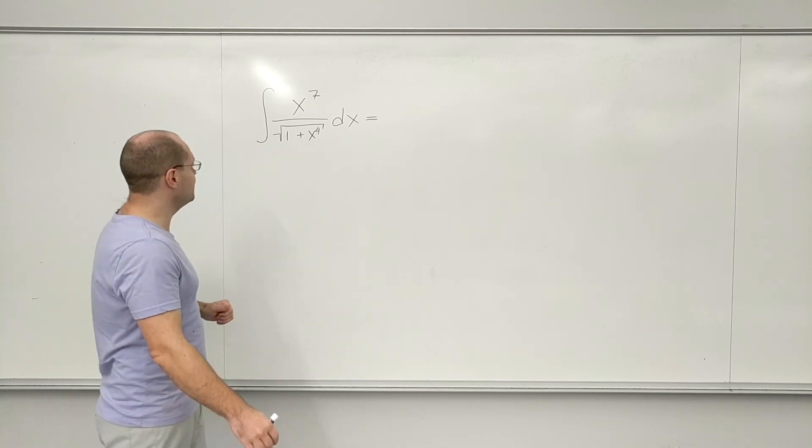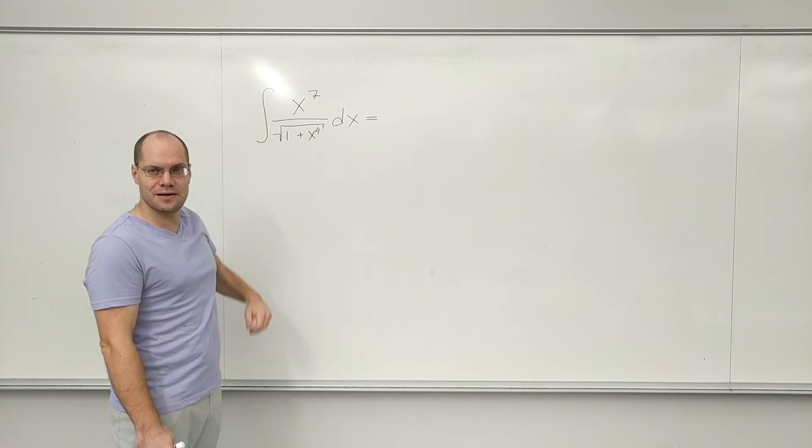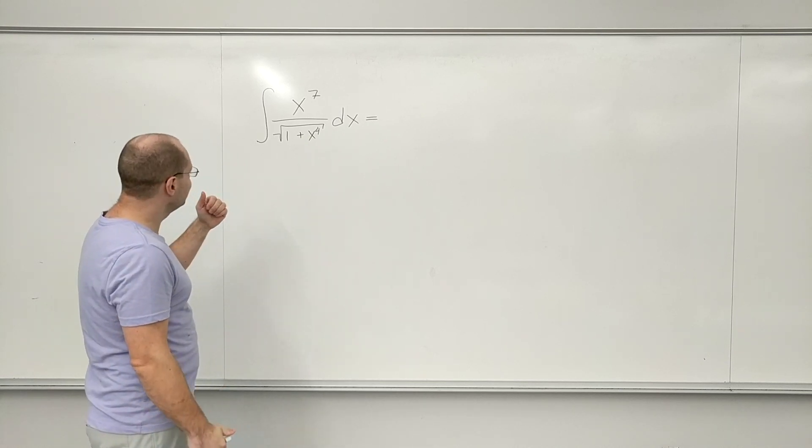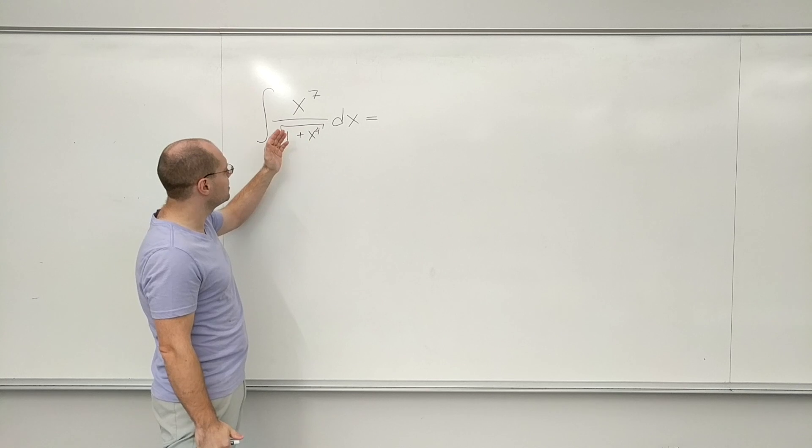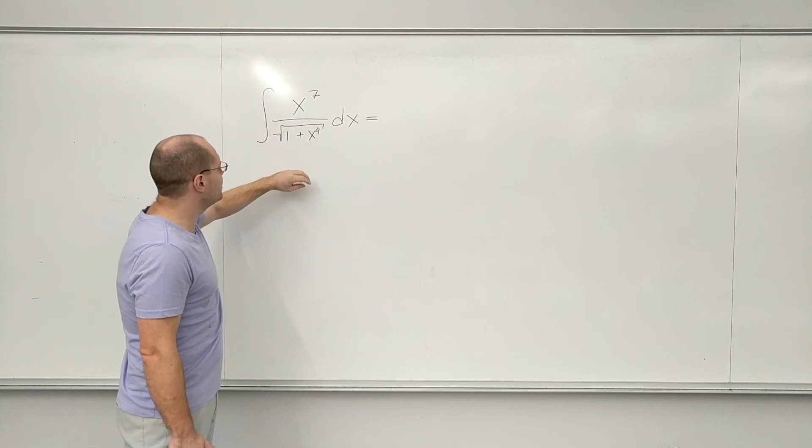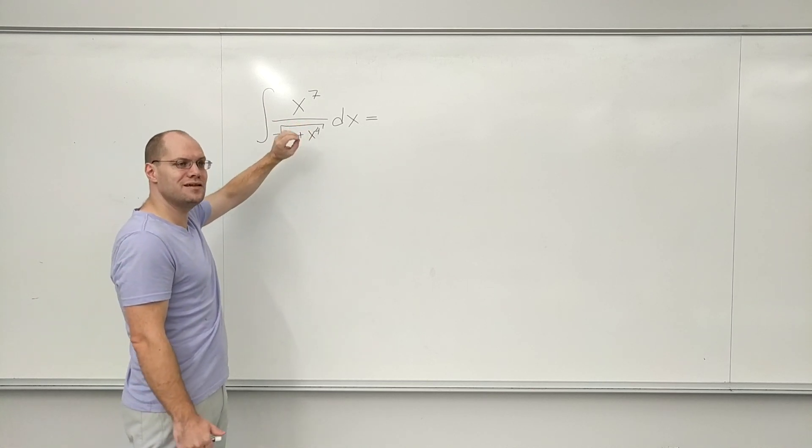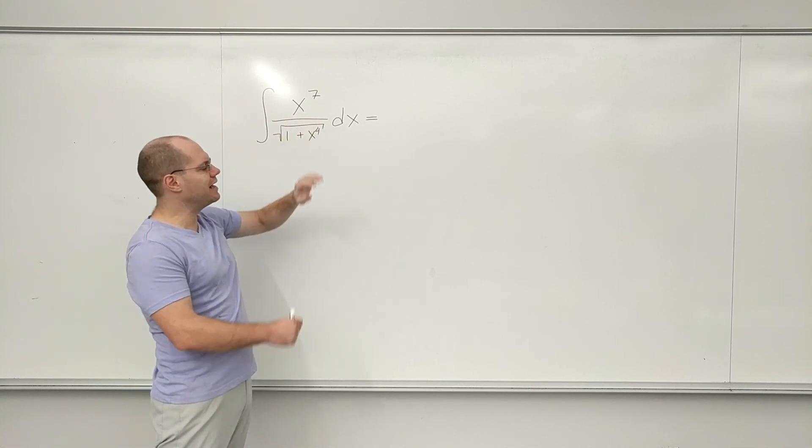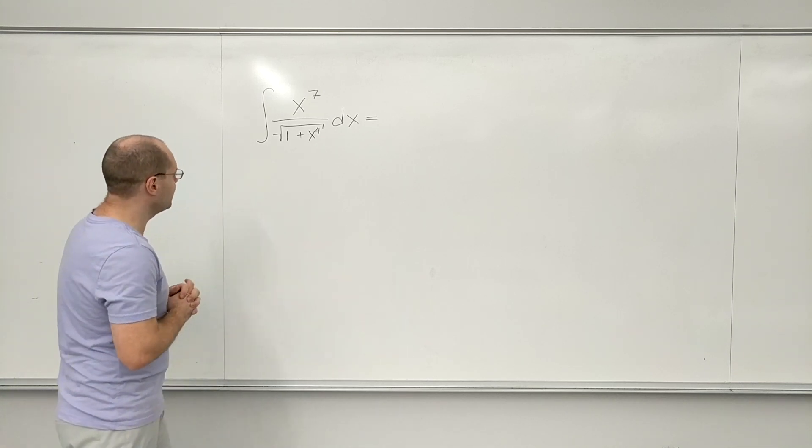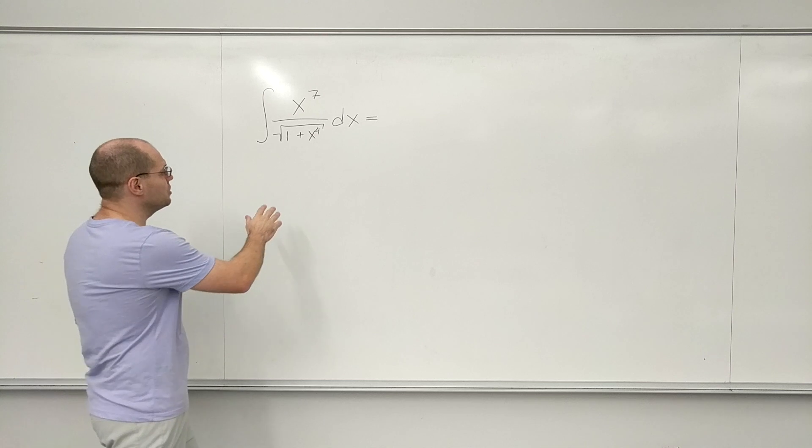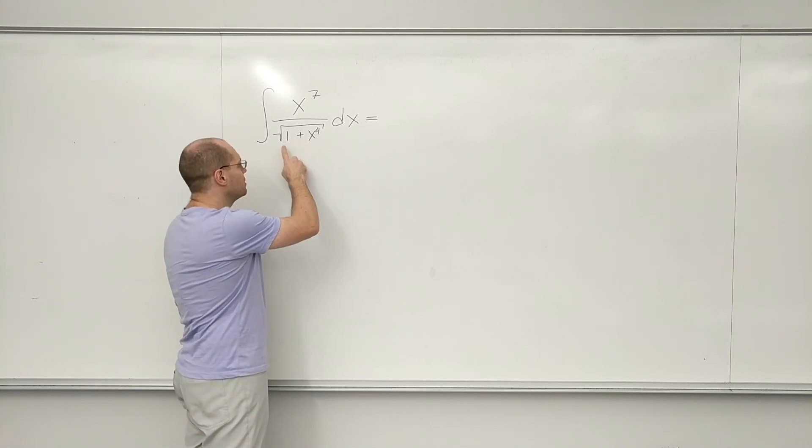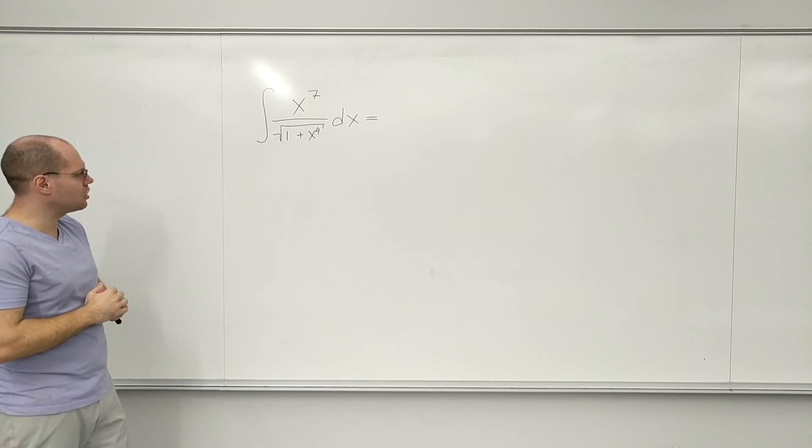The next thing that occurs to me is I'm looking at 1 over something. That makes me think log, but then that doesn't really work either, because if I had log of something like this, I would have 1 over this, and then times the derivative of this, which would be another square root, and that's just not working right. Maybe arc tan will occur to me for a moment, because I see 1 plus something squared, but under the square root, that's a non-starter.